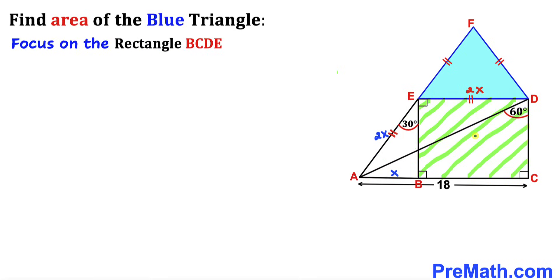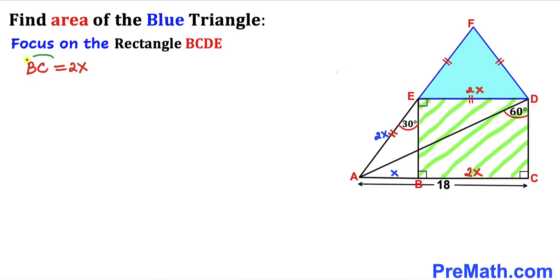Here's our next step. Let's focus on rectangle BCDE. We can see that side length ED is congruent to the opposite side length BC. If ED is 2X, then BC has got to be 2X as well. So our side length BC turns out to be 2X.